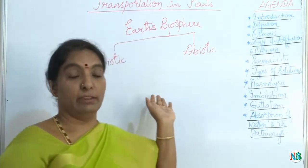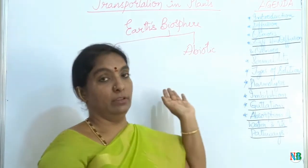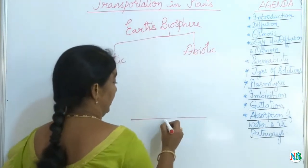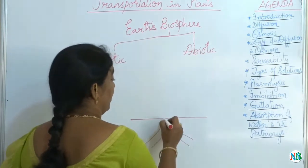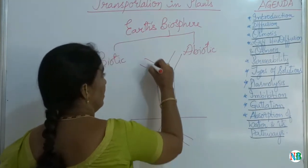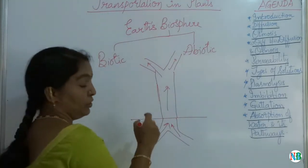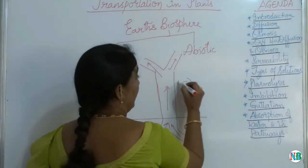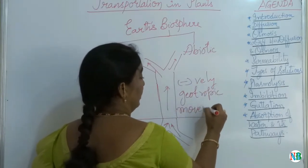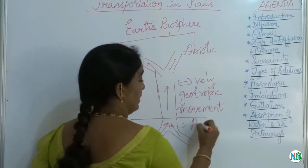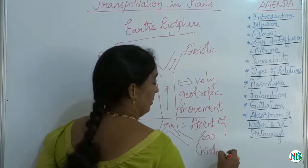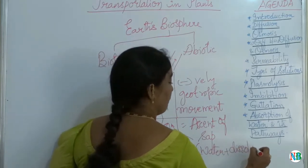Plants absorb water through the roots from their respective habitats, that is either the soil or the water. Root hairs help in absorption of water, and the water absorbed from the root hairs is transported to all parts of the plant body. This transport happens against the gravitational pull. The movement of water here is treated as negatively geotropic movement of water, which is described as ascent of sap. Sap means water with dissolved minerals.